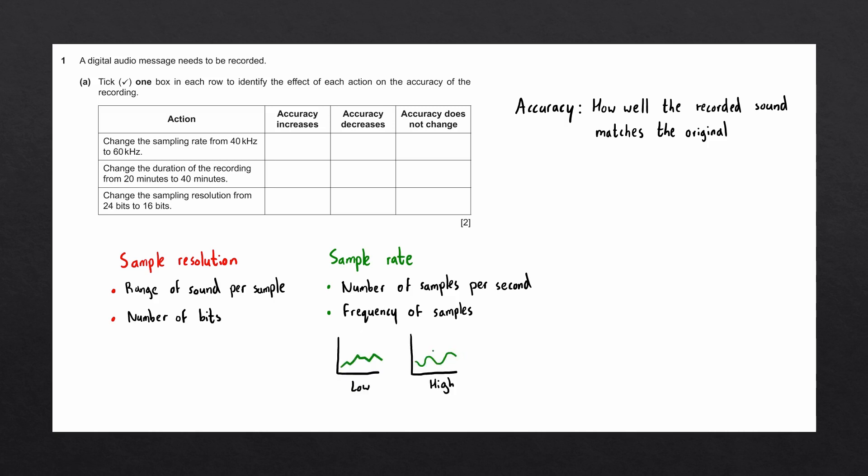Here is a visual representation of a sound wave recorded using a higher sample rate. You can see that the sound wave is a lot smoother since we have many more samples to connect together. With this information, let's go ahead and answer the question.